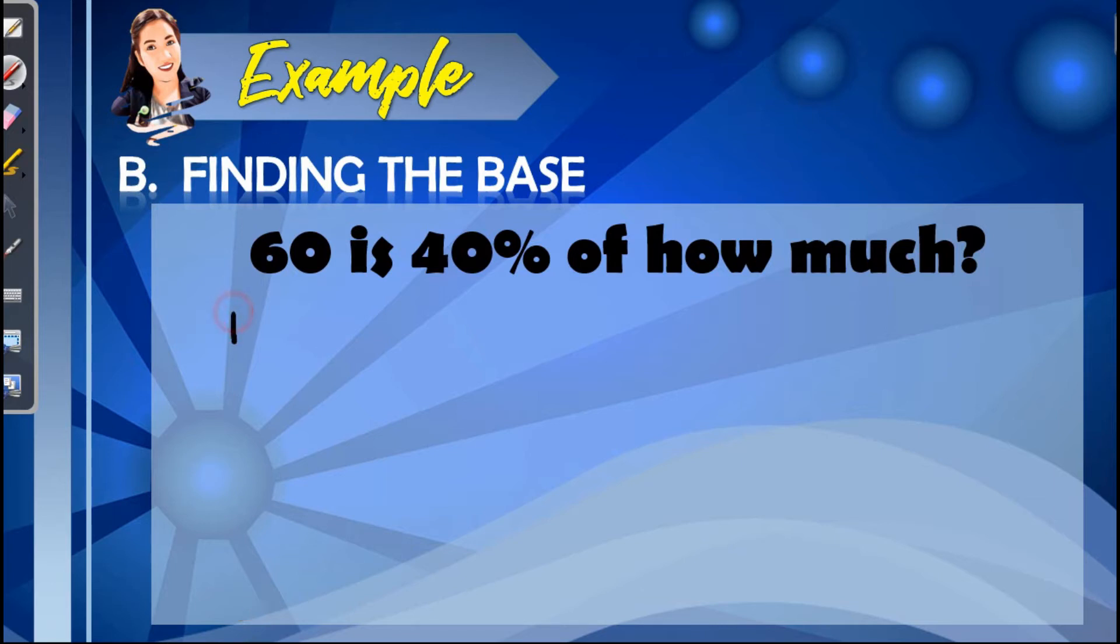we have the value of the rate, which is 40%, or 0.40. We also have the value of the P, or the percentage, which is 60. And in our discussion a while ago, to find the value of the base, we have percentage over the rate.